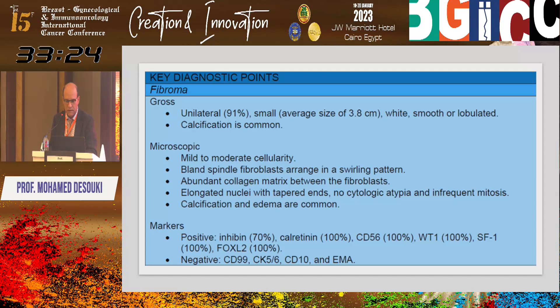I've summarized everything about fibroma in this table. In my experience, inhibin may be about 70% positive and calretinin close to 100%. This is from one publication, so values may vary. I'll leave a few seconds for you to go through this.